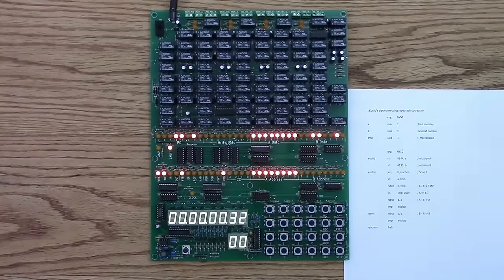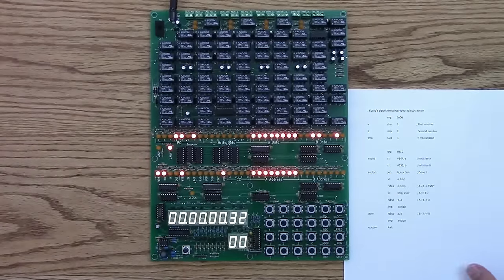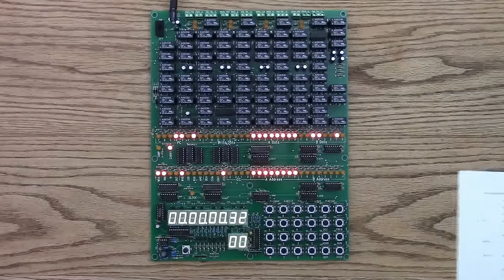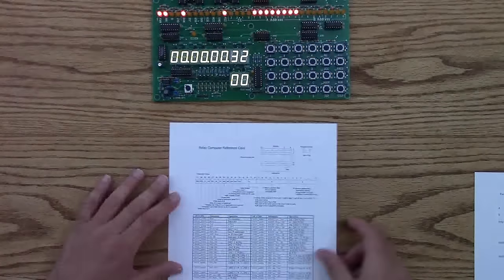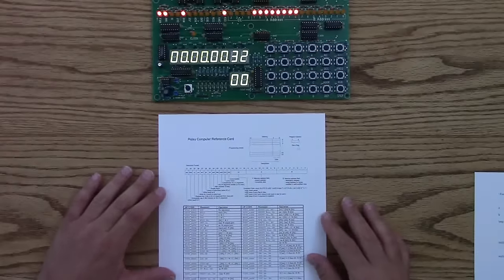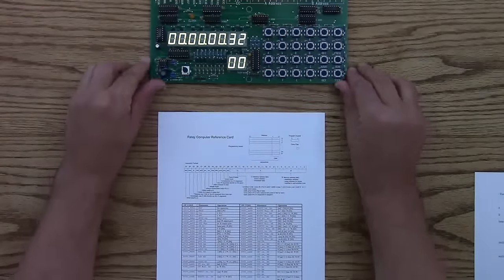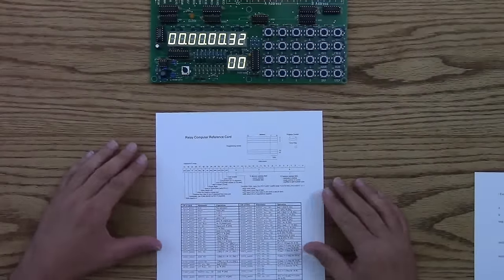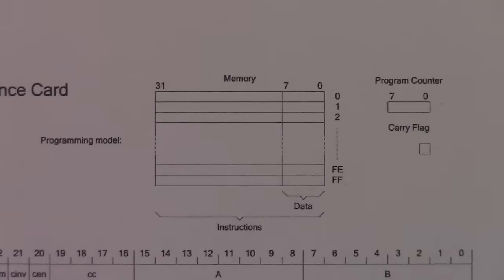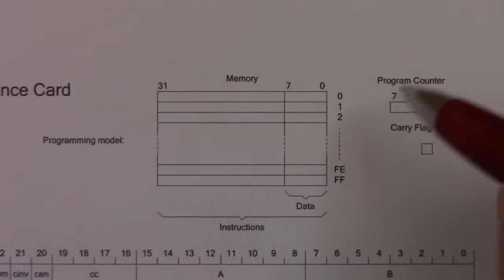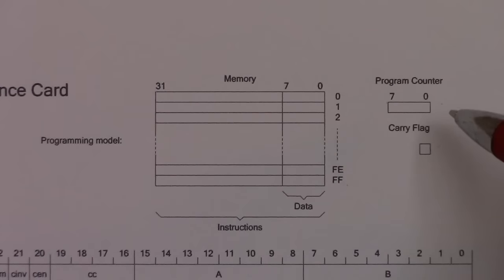Now let's say you want to write your own program. How do you do it on the Relay computer? Well, let's look at the instruction set architecture, and you will see that it is not much different from any other 8-bit computer, for example. So I'm going to zoom in on this. This is the programming model. These are all the bits that the program gets to see and modify.